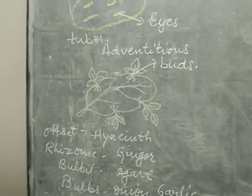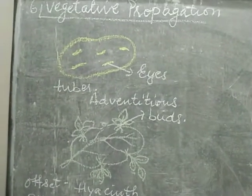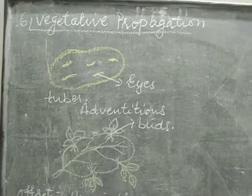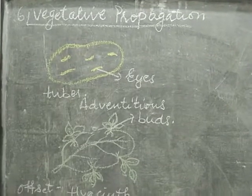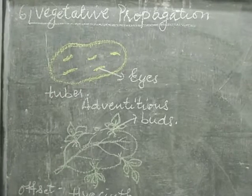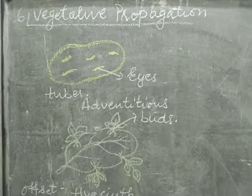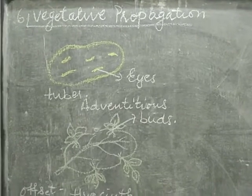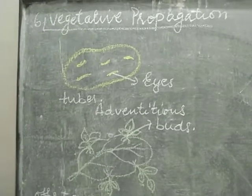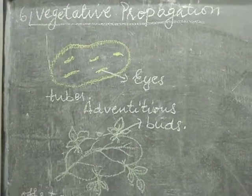The vegetative parts are root, stem, and leaves — not the reproductive part. When there is a formation of a new plant from these parts, it is known as vegetative propagation. Roots, stem, and leaves are the vegetative parts involved. This is a process of asexual reproduction, but in plants we know it as vegetative propagation.